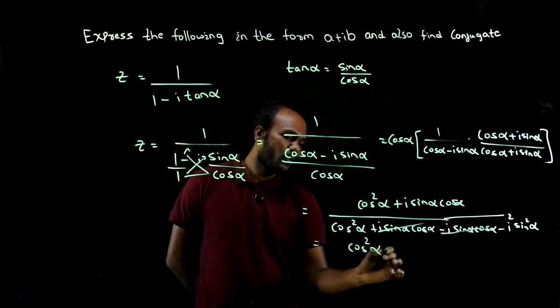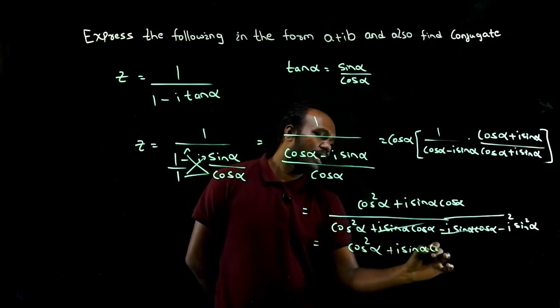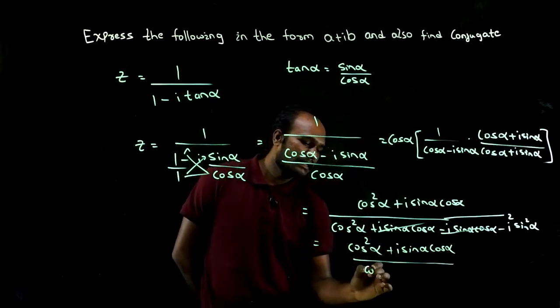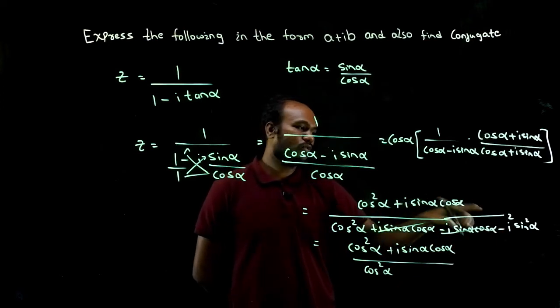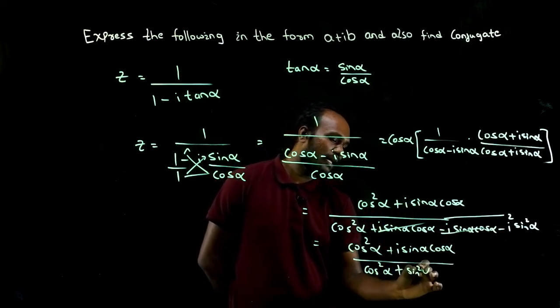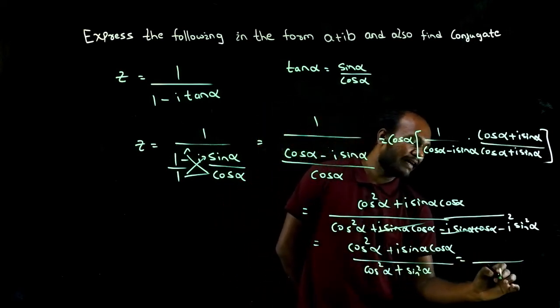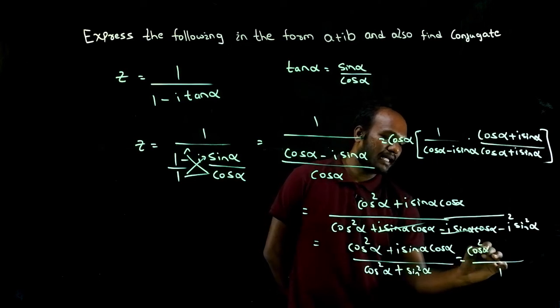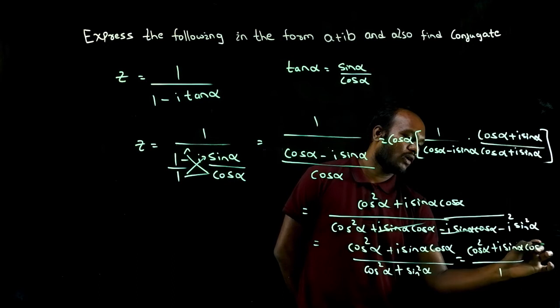So what you have in the numerator is cos square alpha plus I times sin alpha cos alpha, divided by cos square alpha. I square is minus 1, so minus into minus is plus sin square alpha. Cos square alpha plus sin square alpha, we know the value as 1. In the numerator what we have: cos square alpha plus I into sin alpha cos alpha.